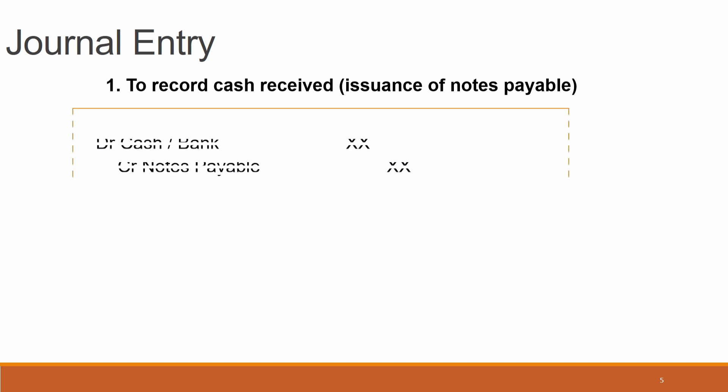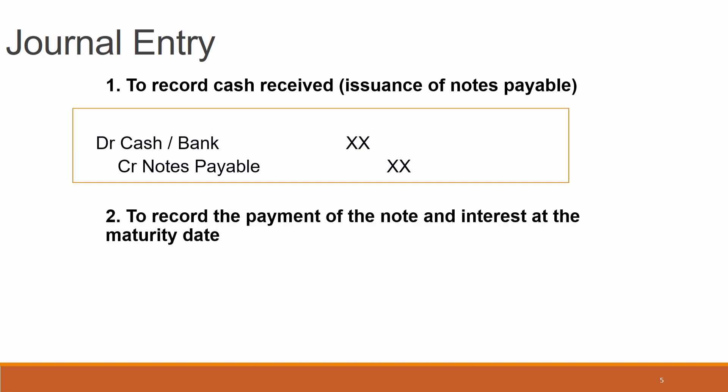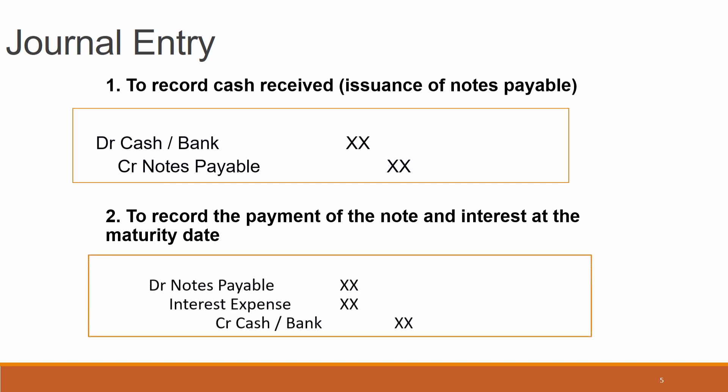There are a few steps when preparing the journal entry. Number one, record cash receipt or issuance of notes payable: Debit Cash or Bank, Credit Notes Payable. Number two, record the payment of the note and interest at the maturity date: Debit Notes Payable, Debit Interest Expense, and Credit Cash or Bank.